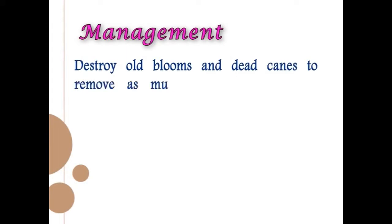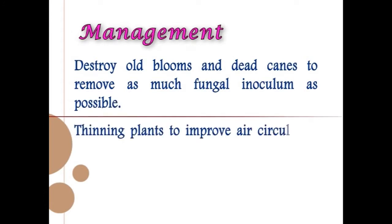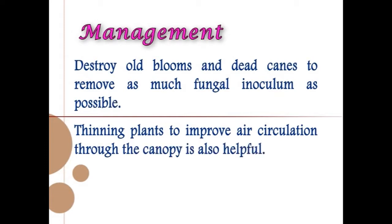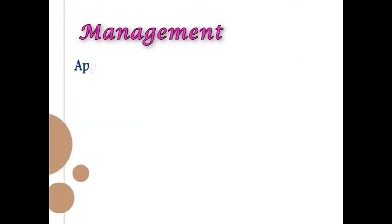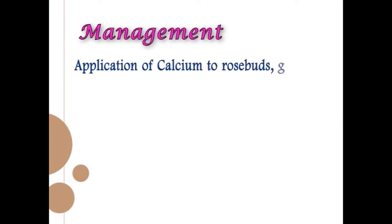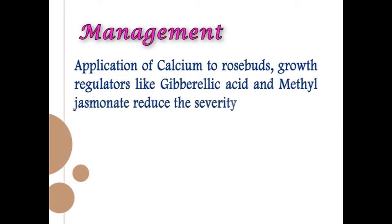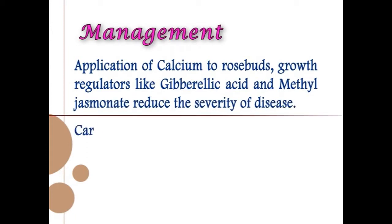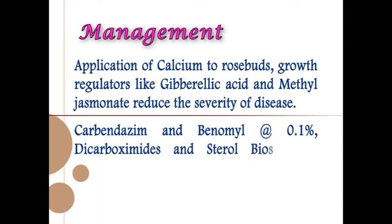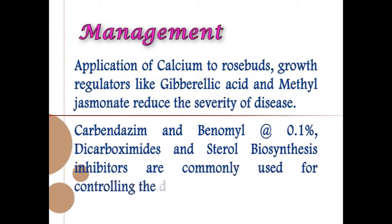For management, destroy old blooms and dead canes to remove as much fungal inoculum as possible. Thinning plants to improve air circulation through the canopy is also helpful. Application of calcium to rose buds and growth regulators like gibberellic acid and methyl jasmonate reduce disease severity. Carbendazim and benomyl at 0.1%, dicarboximides, and sterol biosynthesis inhibitors are commonly used for control.